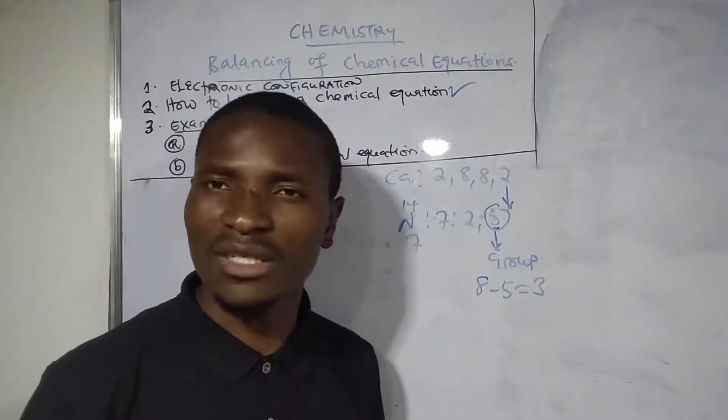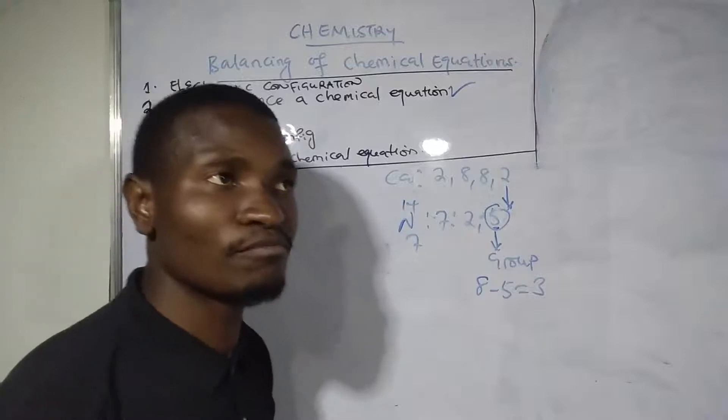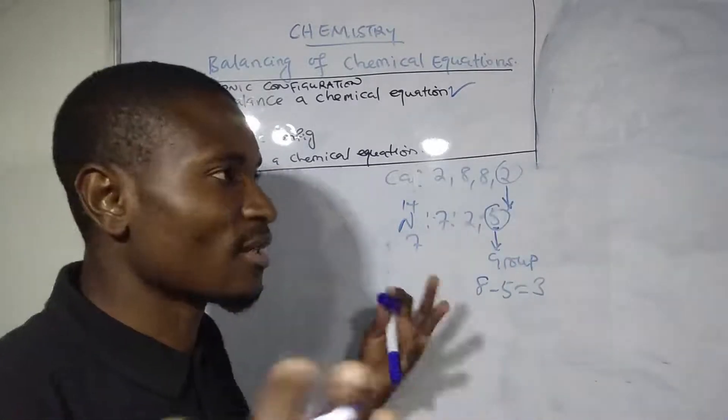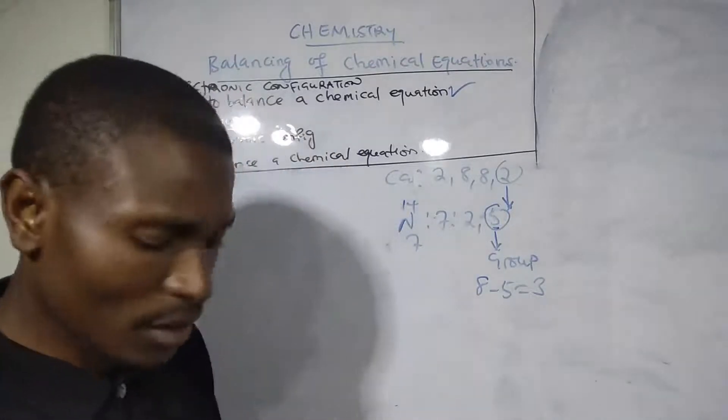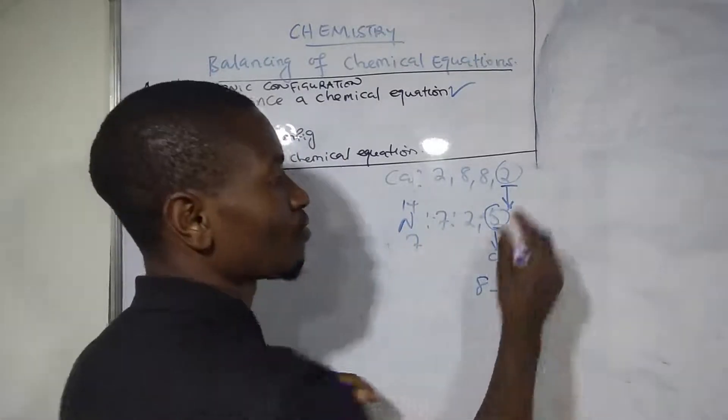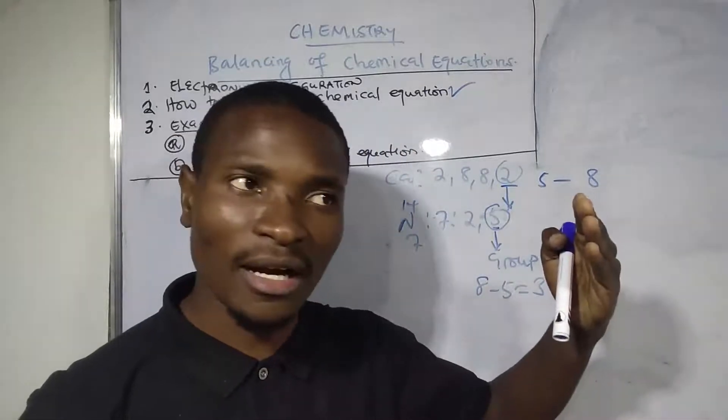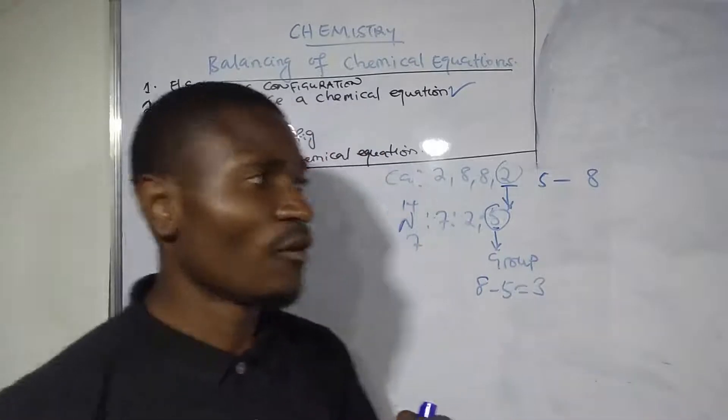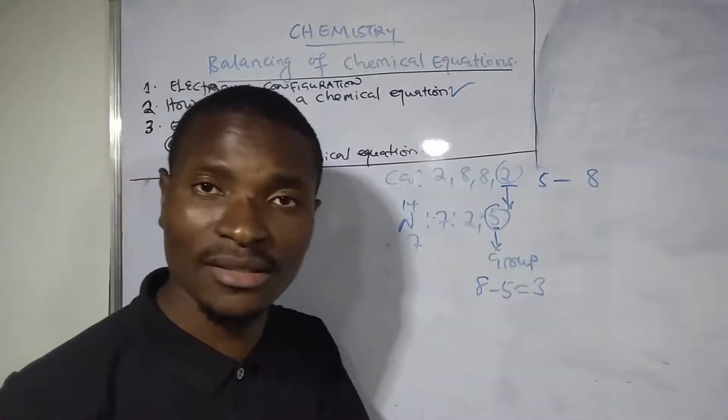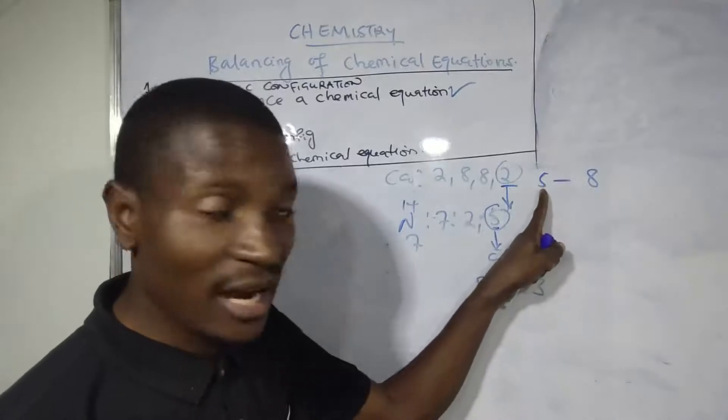This is because we're looking at the octet rule. The octet rule means that an atom must be stable if it has 8 electrons in its last shell. The point I want to emphasize is that when the last number in the last shell is 5 up to 8 - because on the periodic table, groups are numbered 1 to 8 - the last number when you do the electronic configuration also represents the valence.